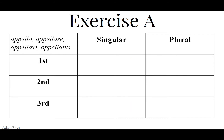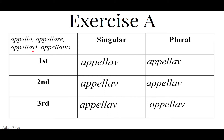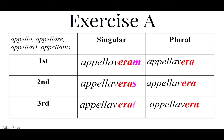For the pluperfect tense, we once again want to go to the third principal part of the verb, because that is where the perfect stem is found. Chop off the I — that is the verb's perfect stem — and write that in all of the blanks. Then we're going to add the tense marker ERA, and then the personal endings: M, S, T, MUS, TIS, UNT.